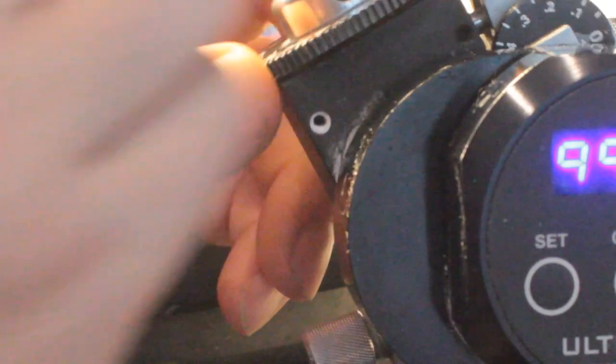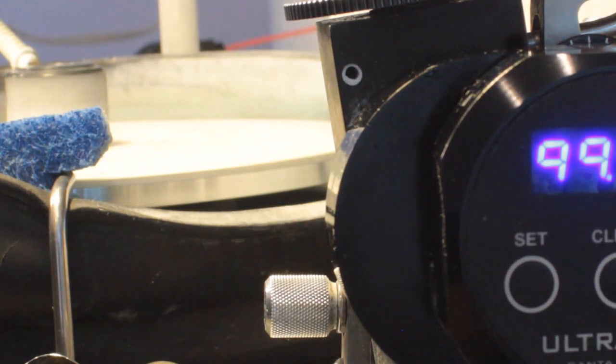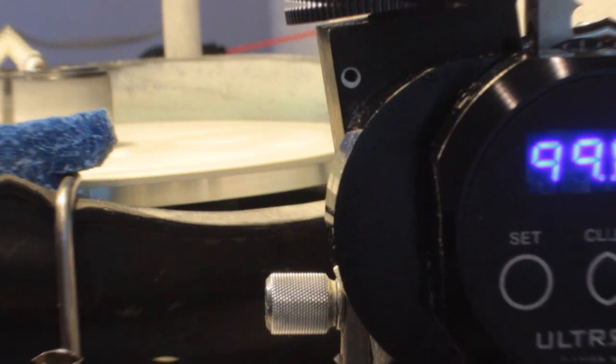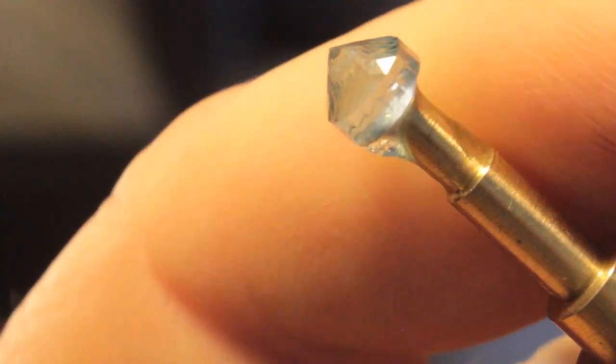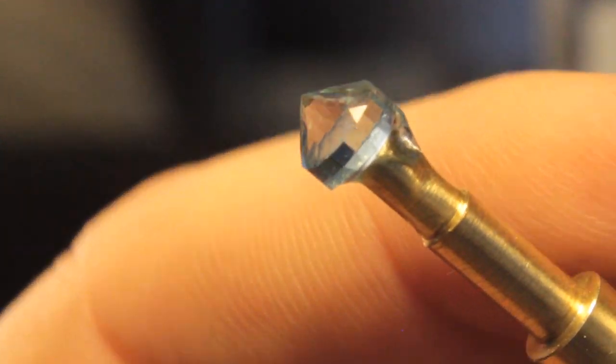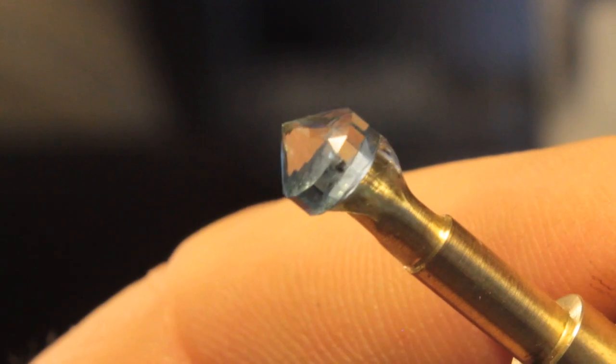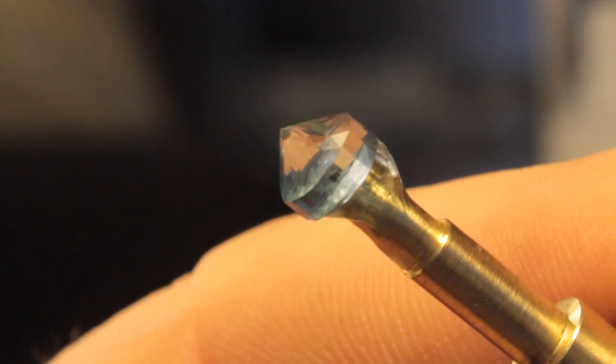So once I've gone around all the teeth, then I'll do a good check of the stone. And then I'll move on to the next tier. Okay, let me put my finger to kind of back block some of the backlight so you can see the girdle is polished. And now I'll go on to the next row and polish the rest of the pavilion.